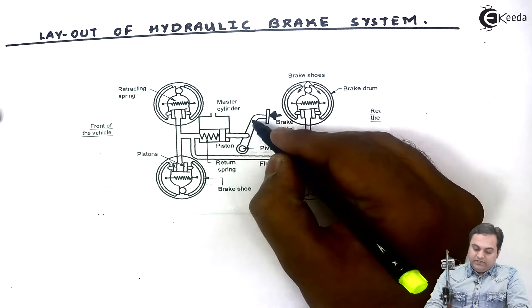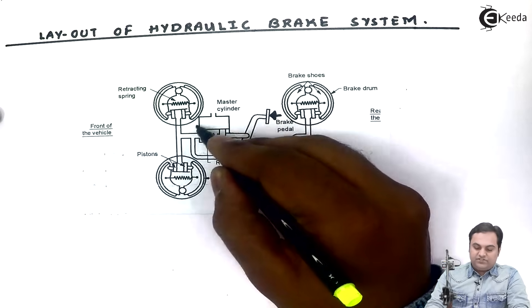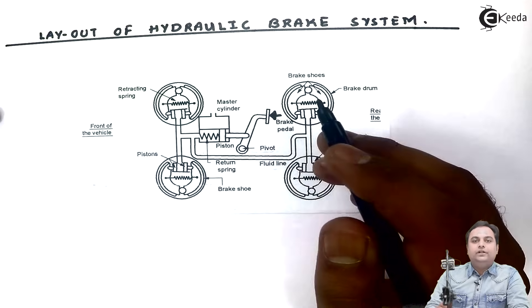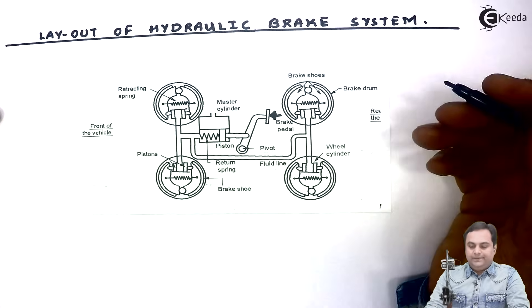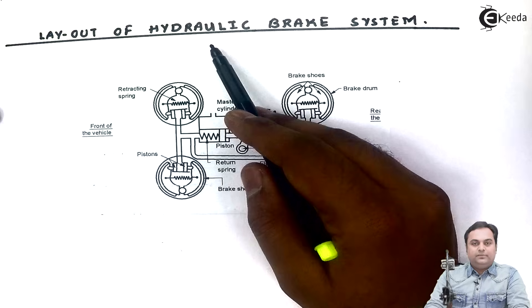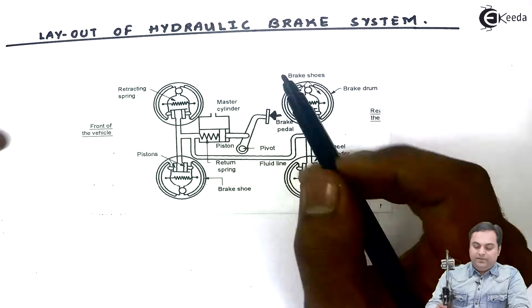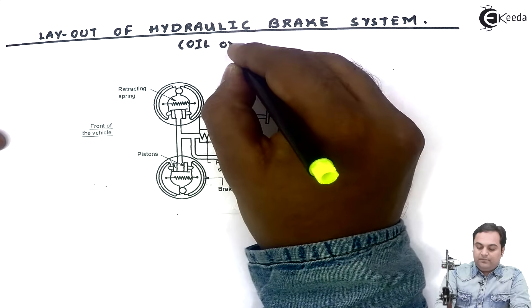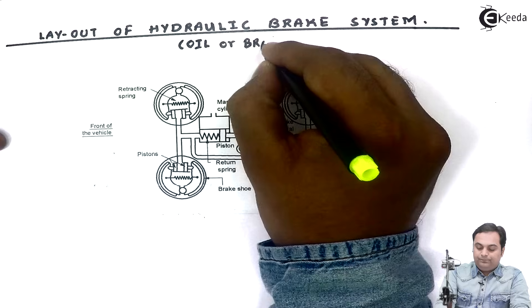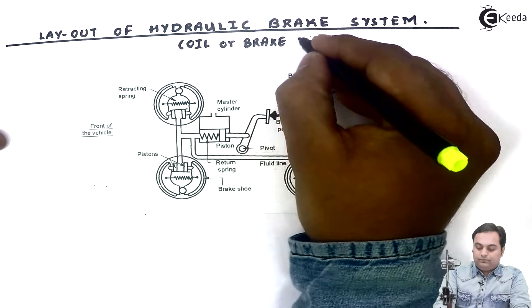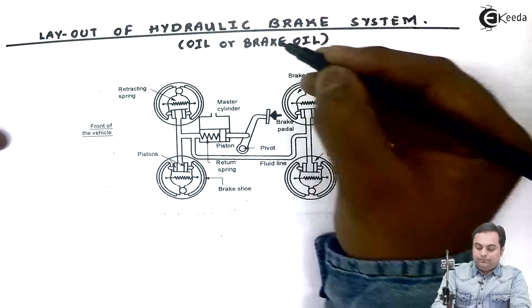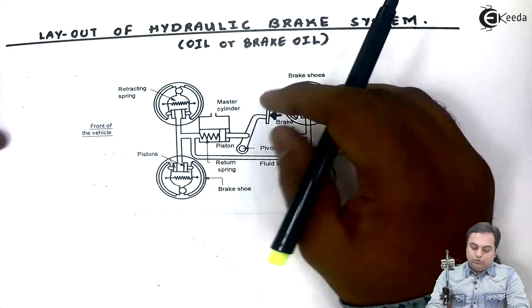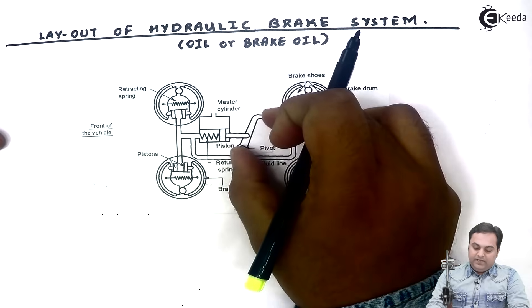When the brake pedal is pressed, the piston in the master cylinder is actuated. The master cylinder is filled with brake fluid, also called as brake oil. Since the medium is hydraulic, it uses oil, and that oil is brake oil.